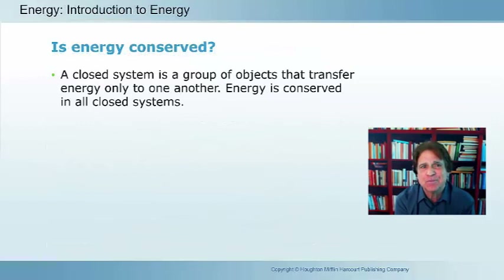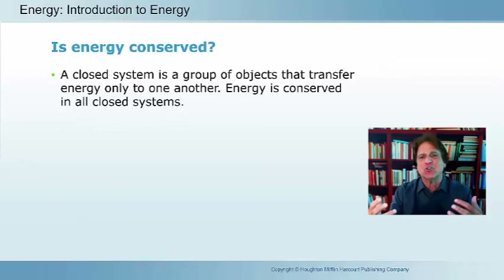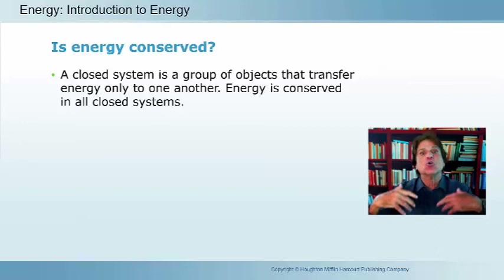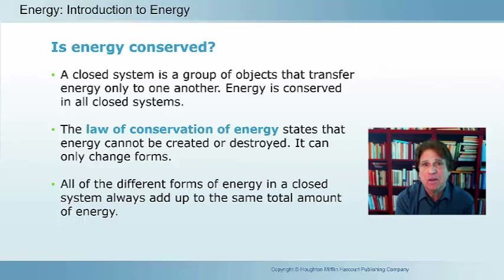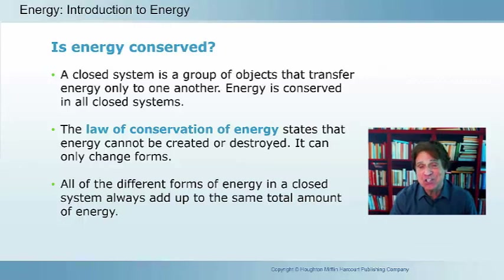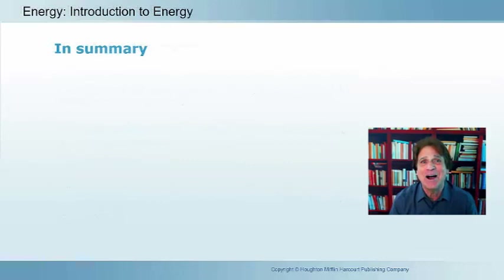What about conserving energy? A closed system has objects that transfer and change energy from one form to another within that system. Energy is not created nor destroyed — it is conserved. The sum of energy stays the same. You cannot create nor destroy energy within that system, but you can change it from one form to another, and the total amount always stays the same.